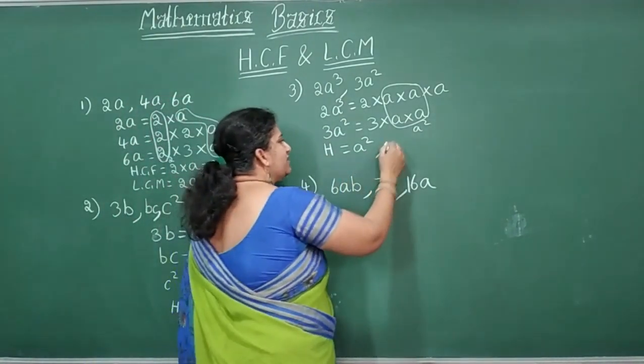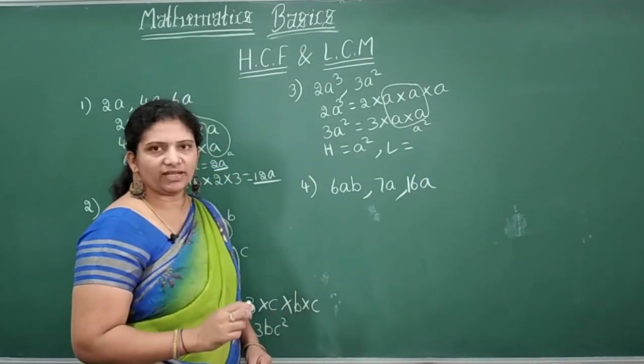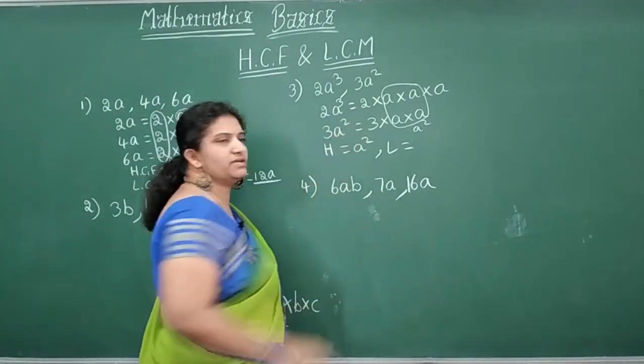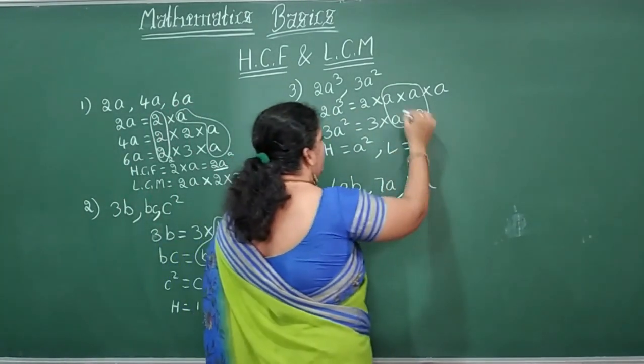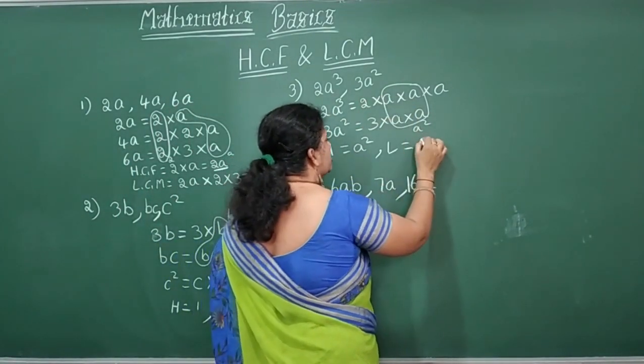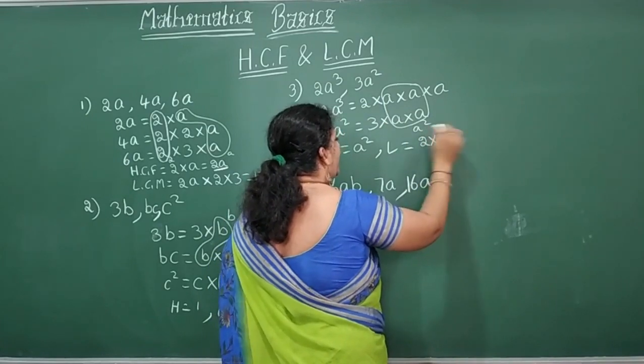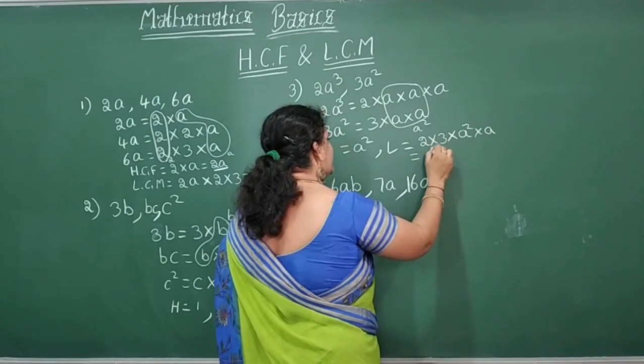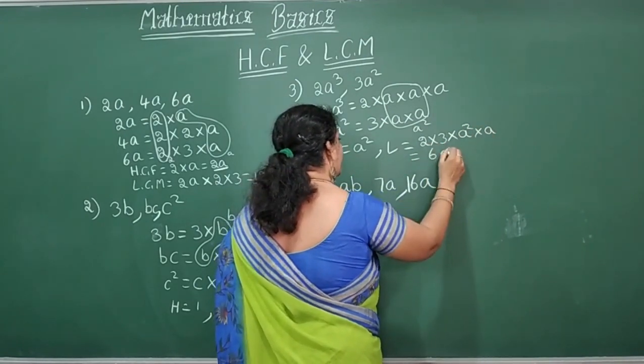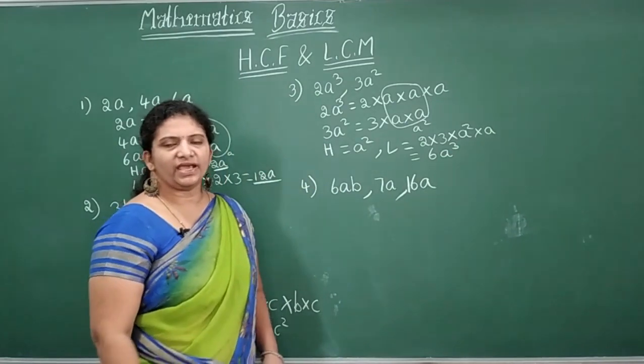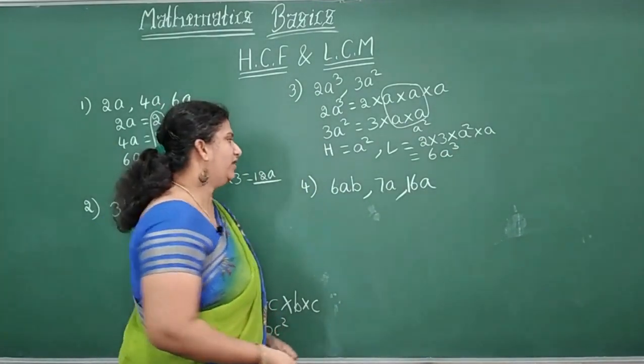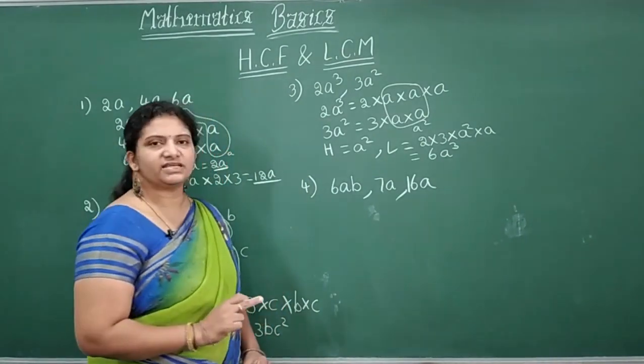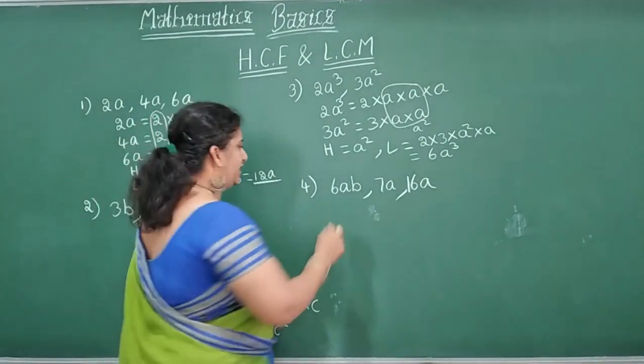Now what is your LCM here? When you are talking about your LCM, common number write one time. Remaining numbers also write. So now I will write first number children. 2 into 3 into A square into A. That will be 2, 3's are 6. A square into A will be A cube. A square into A. Now come to the last problem here. That is 6AB, 7A, 16A.